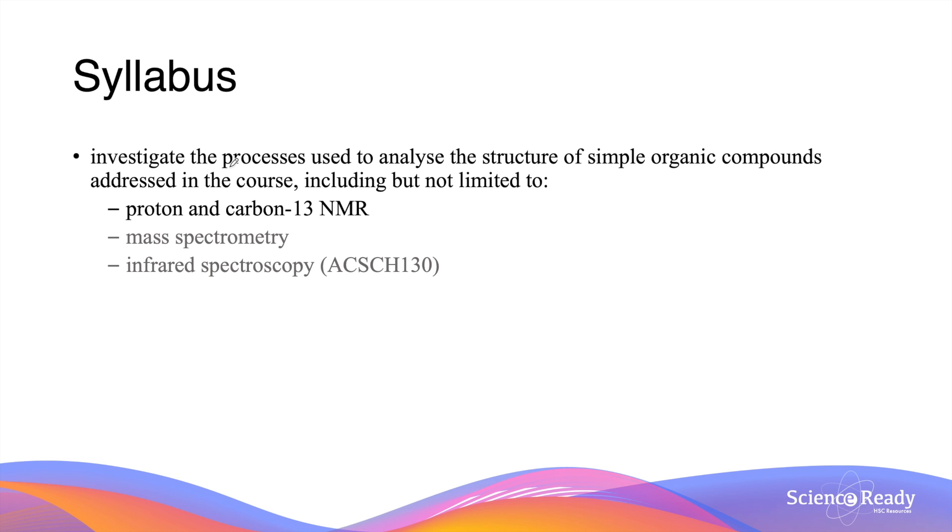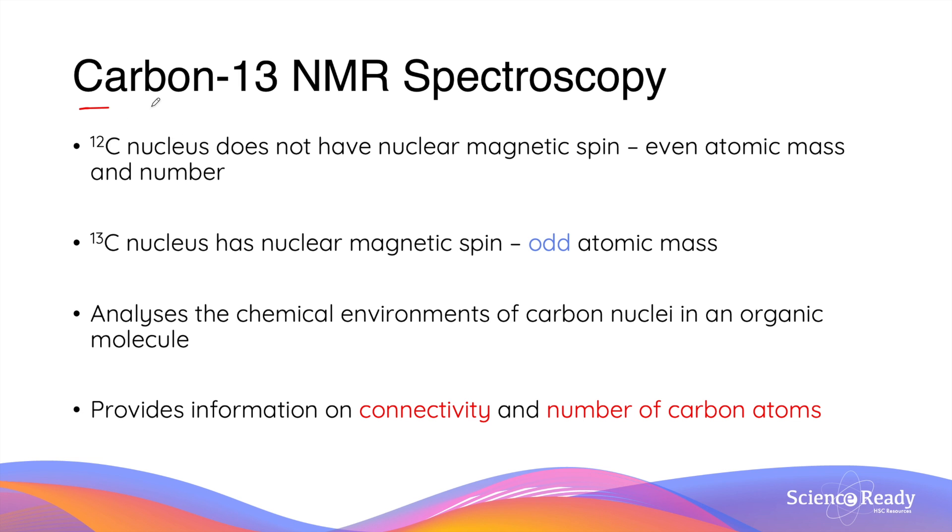This video is on carbon-13 NMR. Carbon-13 is the isotope of carbon. The reason why it's specifically carbon-13 is because carbon-12 nucleus actually does not have nuclear magnetic spin because it has an even atomic mass and also an even atomic number. Nuclei which don't have this magnetic spin property cannot be used in NMR spectroscopy.